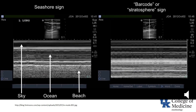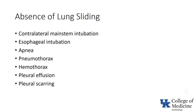Here's a side-by-side comparison of the seashore sign and the barcode sign — notice that the differences are confined to the area below the pleural line. The first prerequisite to see lung sliding is that the lung underlying the probe must be receiving ventilation. Esophageal intubation, apnea, or intubation of the contralateral main stem bronchus will all result in absence of lung sliding. Also, interposition of anything between the visceral and parietal pleura — such as air, blood, or scarring from pleurodesis or prior thoracic surgery — will result in absence of lung sliding.